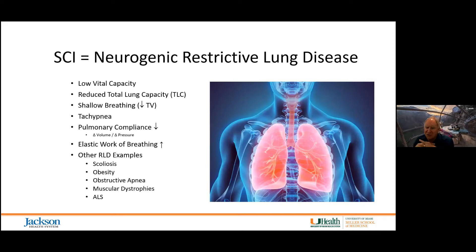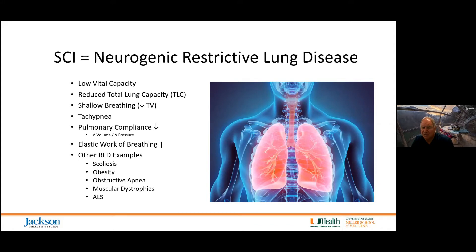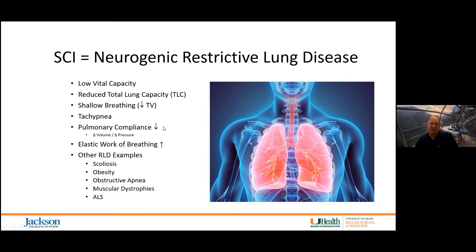Neurogenic restrictive lung disease occurs because the person has the inability to completely expand the thoracic space, due to diminished use of the intercostal muscles, diaphragm, or both. Restrictive lung disease is characterized by a low vital capacity, reduced total lung capacity, shallow breathing — tachypnea — and diminished pulmonary compliance, making the work of breathing greater.